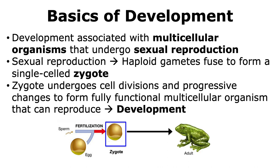The zygote undergoes many rounds of cell divisions and a lot of changes to form a fully functional multicellular organism, which in this case is a frog. This process of going from the single-celled zygote to the fully developed multicellular organism comes under the realm of development.